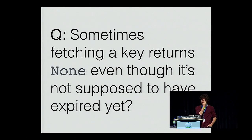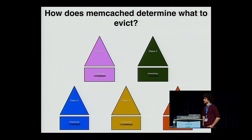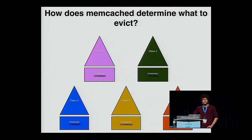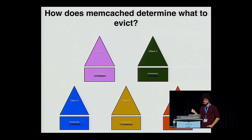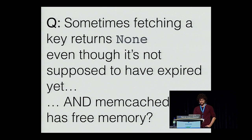A question: sometimes fetching a key returns none even though it's not supposed to have expired yet. Memcached has a fixed amount of memory. If you try to store data when memory is full, data will get evicted. The way memcached determines what to evict is by using an LRU — least recently used — cache. Internally, each object is given a timestamp that's updated every time the object is created, updated, or fetched. When data needs to be evicted, the object with the oldest timestamp is picked. So if you try to fetch an object that got evicted, you get none.